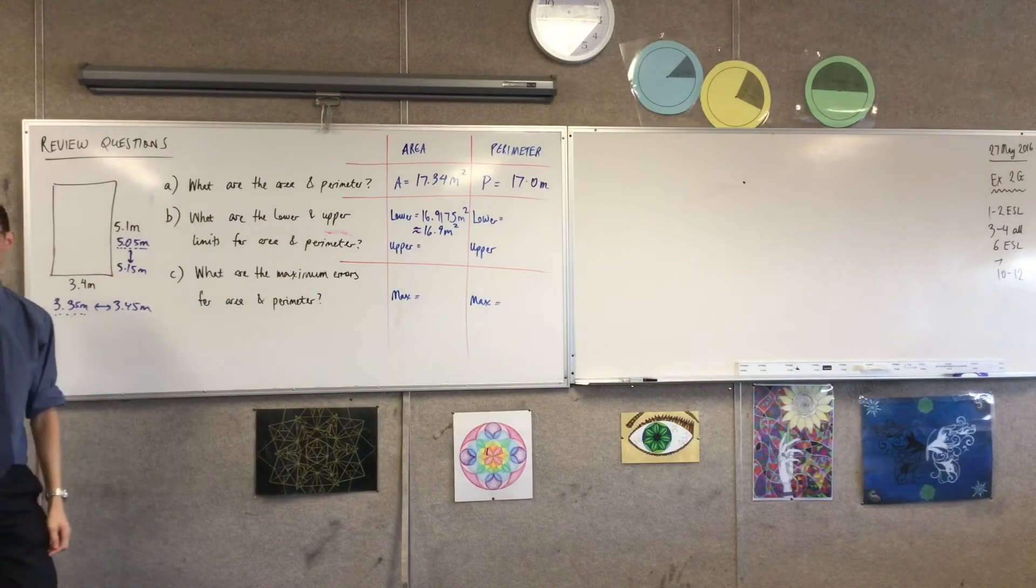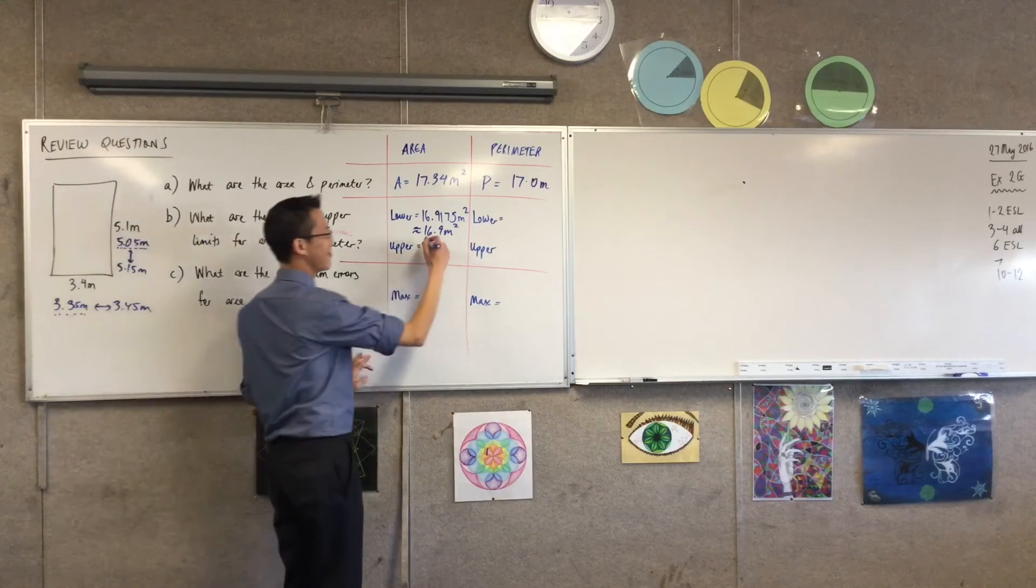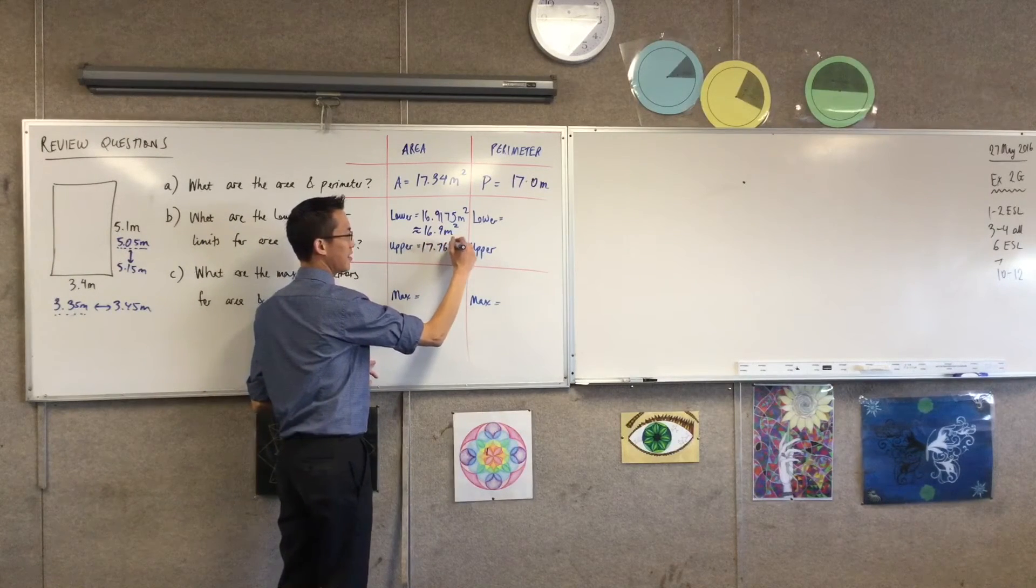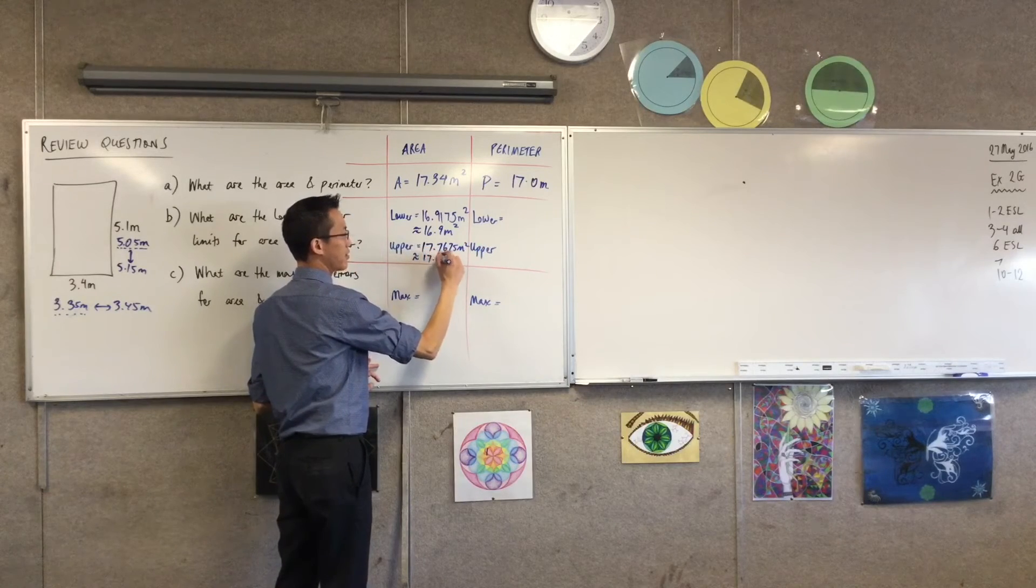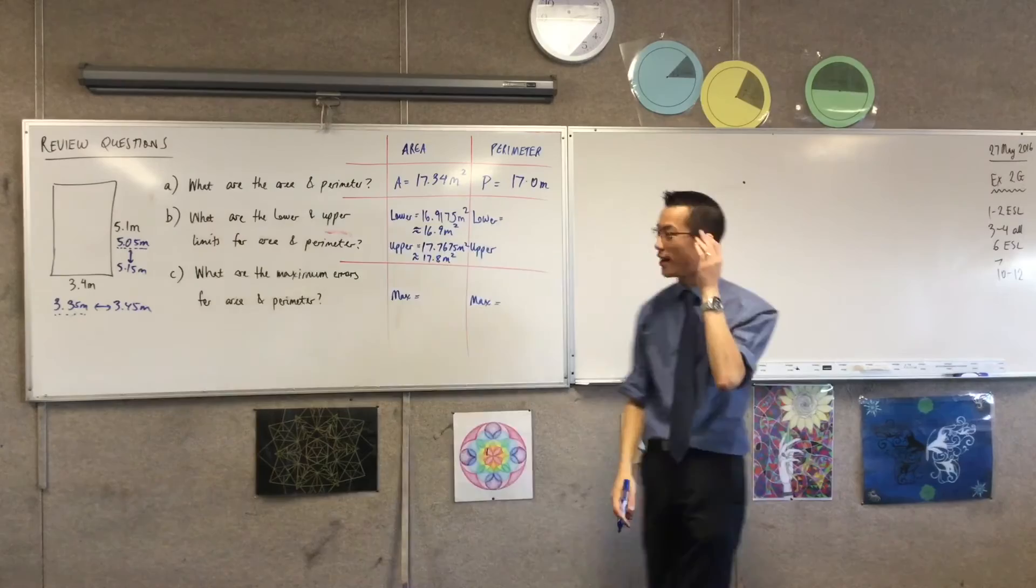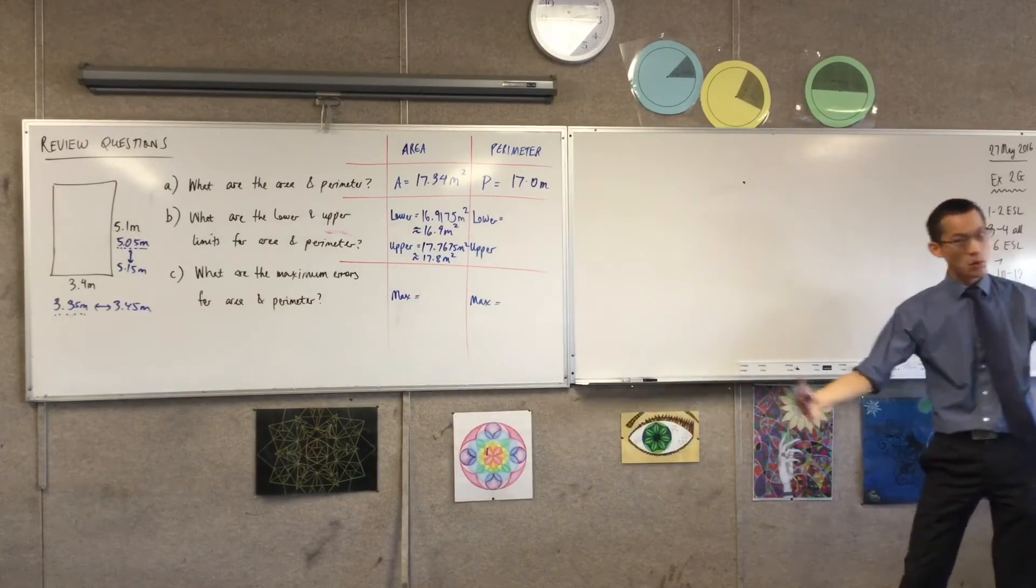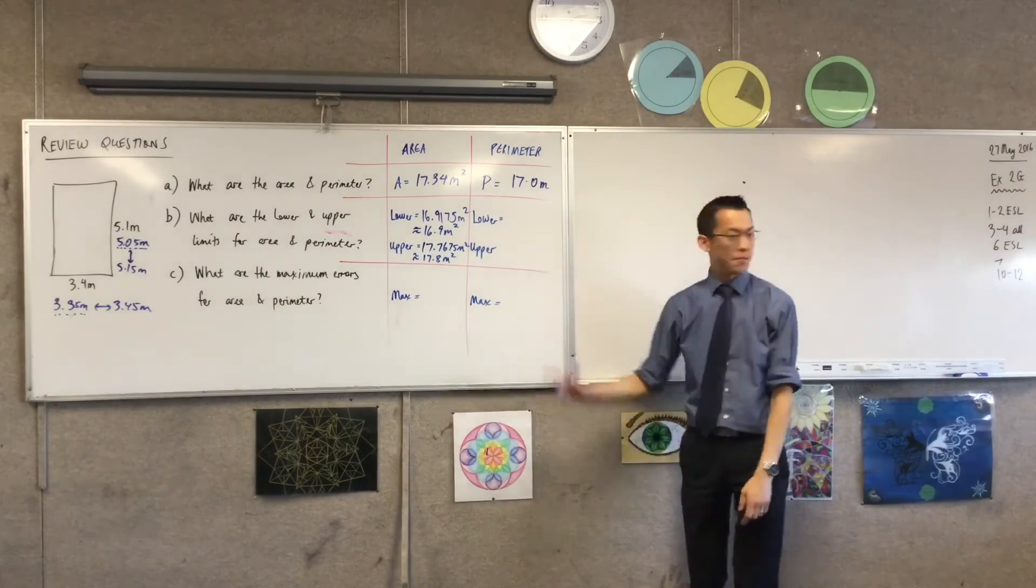Can someone get me an upper one now? 17.8 meters. So let's round that. Very good. So there's almost a whole square meter between your lower and upper bound. That's quite a big margin, all right?